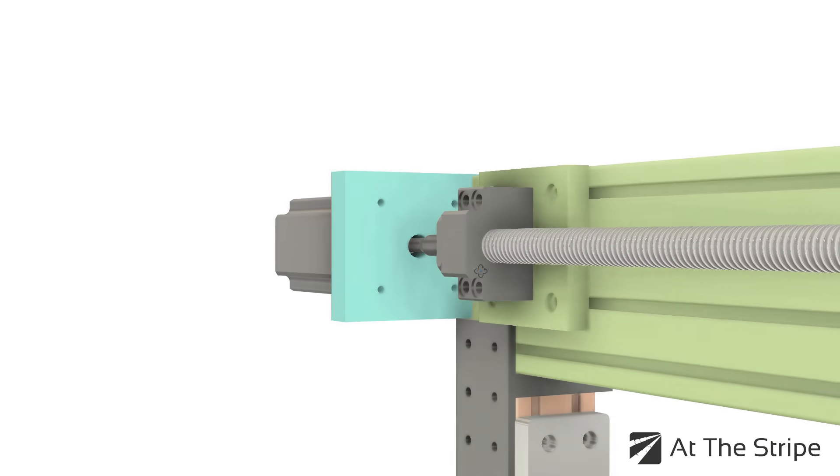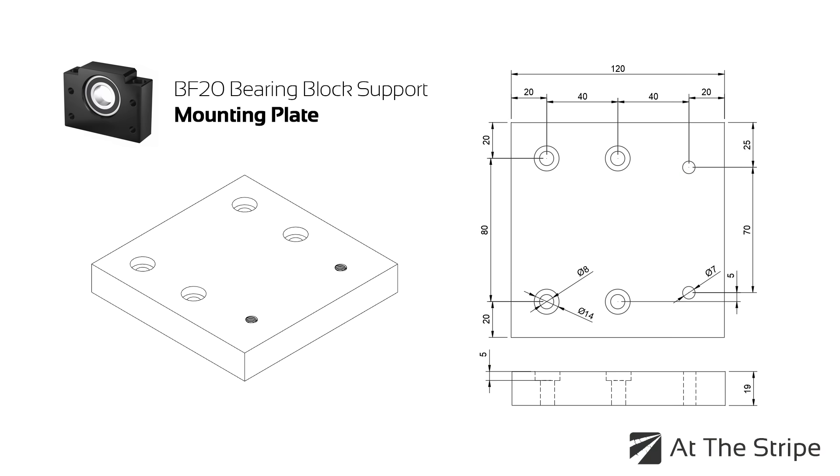The BF20 bearing block support. The BF20 bearing block is designed to support the 25 millimeter ball screw that I'll be using for my y-axis. The block is secured using two 55 millimeter M8 bolts, and the mounting plate has two 7 millimeter holes that will then be tapped for the M8s.